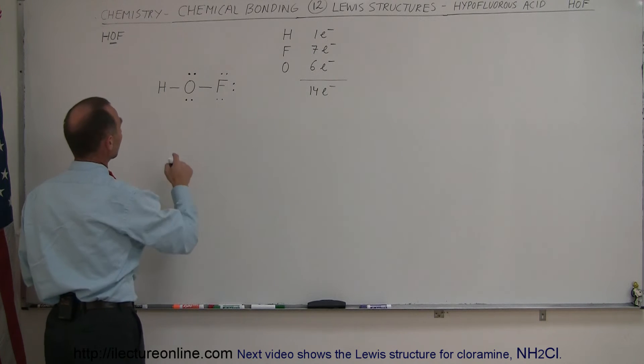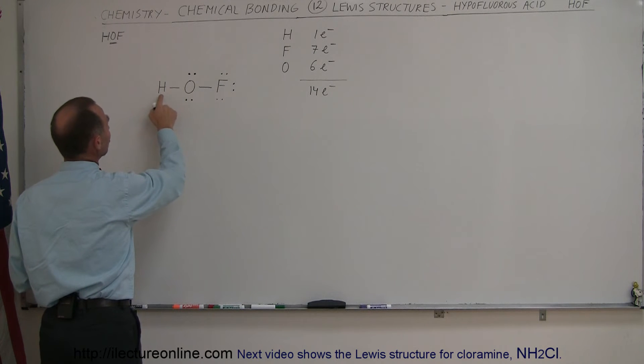All right, first of all, the octet rule. Well, hydrogen can only have two, and if we draw a circle around here, we can see that that hydrogen would indeed have two electrons, which is good.